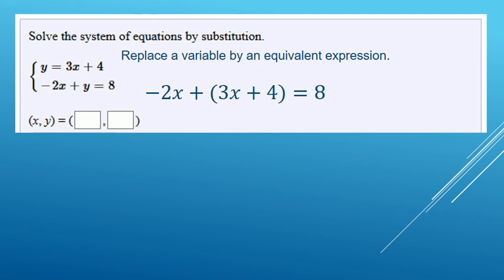Now we just need to solve. Let's clean it up first, add like terms. Negative 2x and 3x makes 1x, plus 4 equals 8. We need to undo the plus 4 to get x by itself. We're going to do that with a minus 4 to both sides.